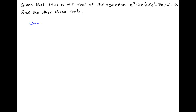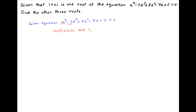We are given the equation x raised to the power 4 minus 3x cubed plus 8x squared minus 7x plus 5 is equal to 0. The coefficients of this equation are 1, minus 3, 8, minus 7, and 3.